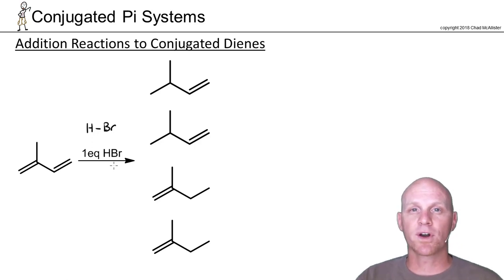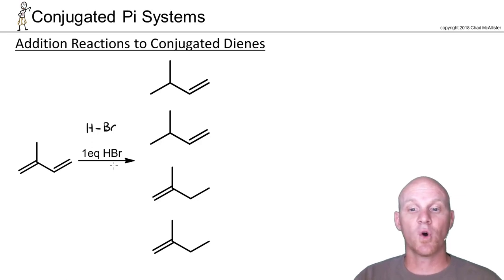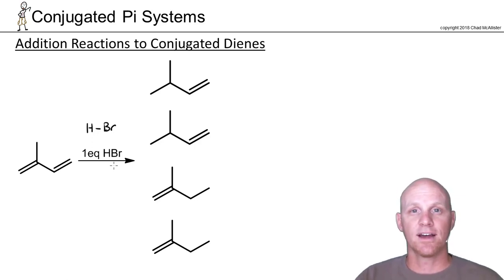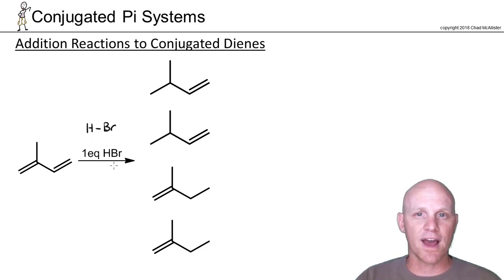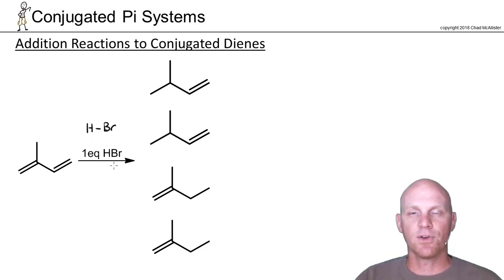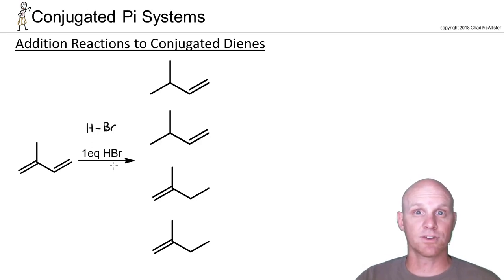With a conjugated system it's more complicated, and we're just going to look at adding one equivalent. With only one equivalent, only one of the pi bonds gets to react. The first thing to figure out is which pi bond reacts and why, and we'll find that we can predict different products — and by changing conditions, we might even choose a different product.